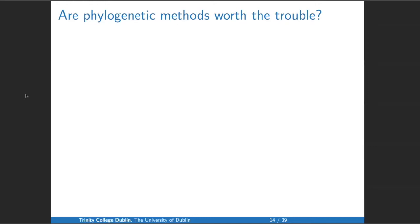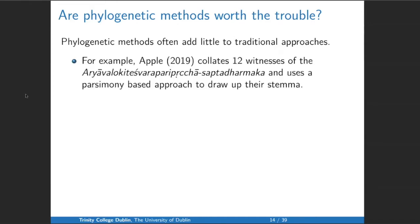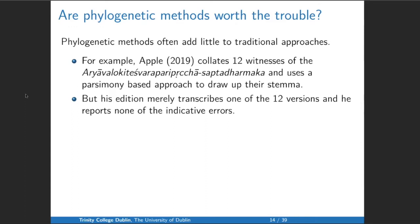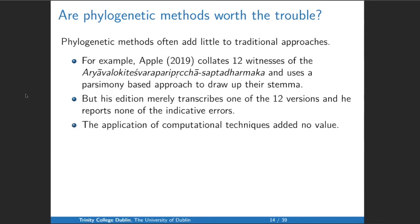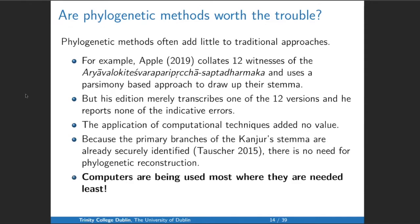Are these phylogenetic methods even worth the trouble? Oftentimes there's little benefit over traditional approaches. Apple in 2019 collated 12 witnesses of the Arya Avalokiteshvara Pariprcha Sapta Dharmaka and used the parsimony-based approach to draw up their stemma. But his edition merely transcribes one of the 12 versions — a diplomatic edition, not a critical edition — and he doesn't even report the indicative errors the stemma relies on. So the application of computational techniques has not added any value. Because the primary branches of the Kangyur stemma are already securely identified, there is no need for phylogenetic reconstruction. Computers are being used most where they are needed least.